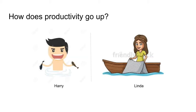Linda fishes only six hours per day, catching six fish by hand. Unlike Harry, she eats only six fish, saving two hours. She invests those two hours building a net, believing it will help her catch more fish in less time — foregoing consumption today to consume more in the future with less effort.